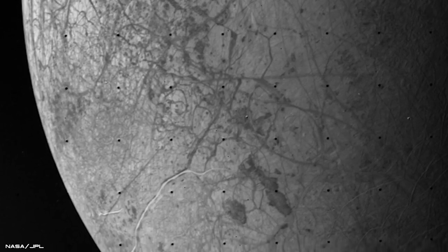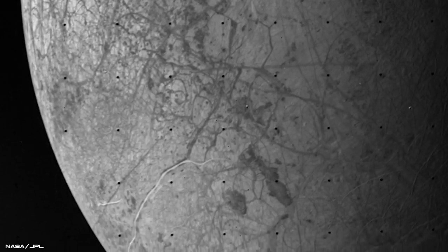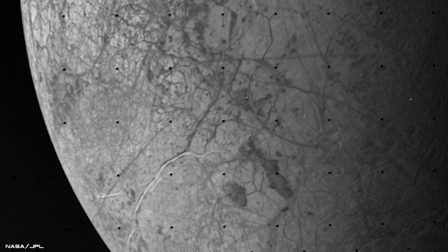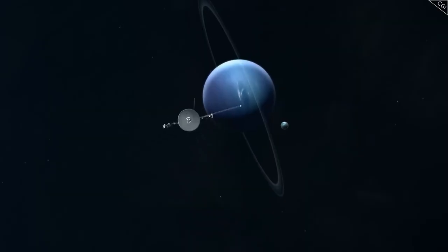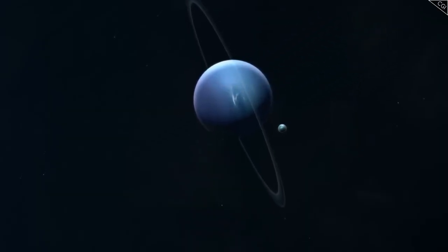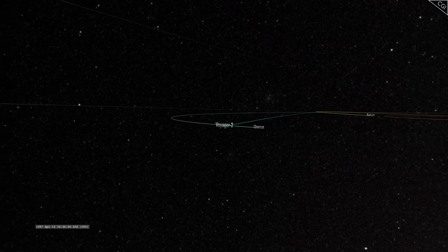As of January 2024, Voyager 1 is approximately 14.9 billion miles, 158 times Earth's distance from the Sun, making it the farthest human-made object in space.